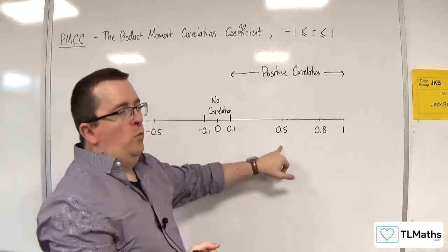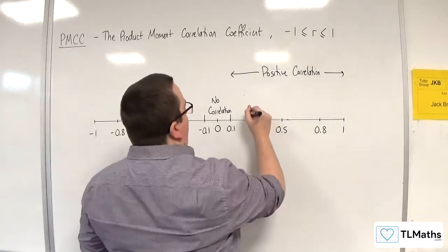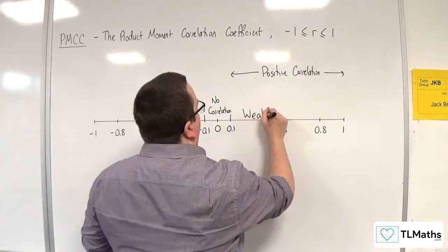And if it's between 0.1 and 0.5, we would say that that is weak positive correlation.